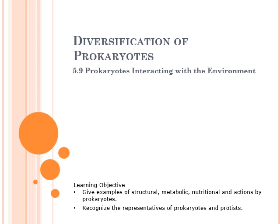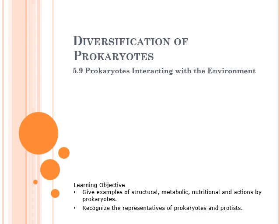We're going to talk about prokaryotes interacting with the environment. We're going to talk a little bit about the carbon cycle — we ended the last bit of the lecture with the nitrogen cycle, and now we're going into the carbon cycle. Please note they're entirely different processes. The carbon cycle is the sum of all reactions on Earth between carbon-containing compounds, going from inorganic to organic carbon and back again.